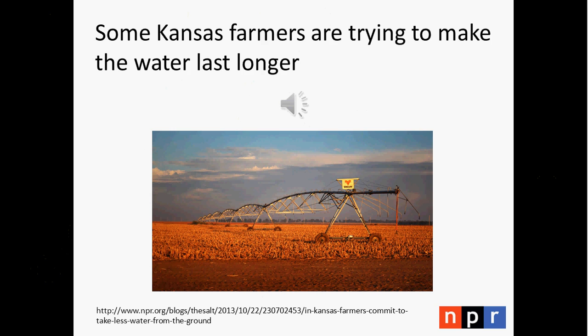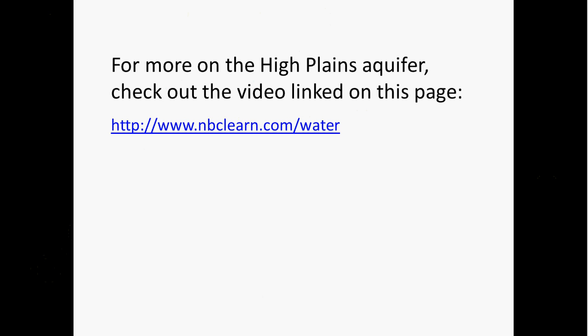So obviously this is a very difficult and complicated issue, and it's going to be important to make progress in this area — but it's not going to be easy. Putting all this together, it's clear that the status of the High Plains aquifer is very important to the future of Kansas and other places in the High Plains. This wraps up this portion of the lecture, but before you start the next portion, I want you to watch the short video linked here through NBC Learn. The title of the video is 'Sustainability: Water — the Ogallala Aquifer.' This video does a great job talking about the problem and the science going into finding a solution, and you will be responsible for that content.